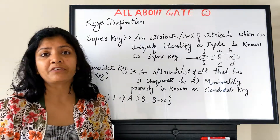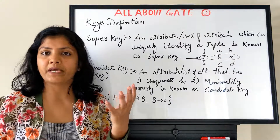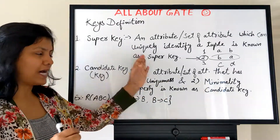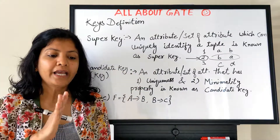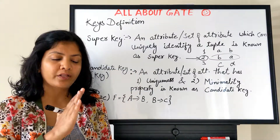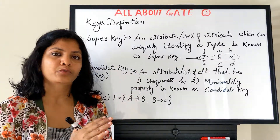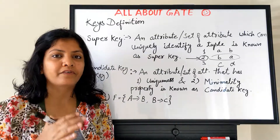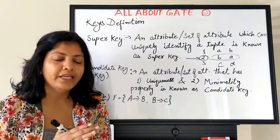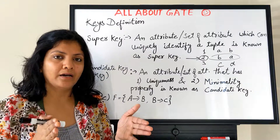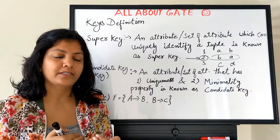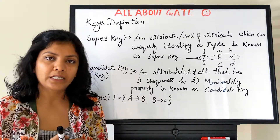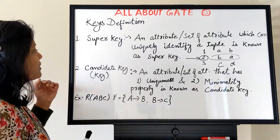This property is known as uniqueness. An attribute or set of attributes which has the uniqueness property is known as a super key. Any group of attributes — single, two, three, or any number — whose values are always unique in the tuples are nothing but super keys.